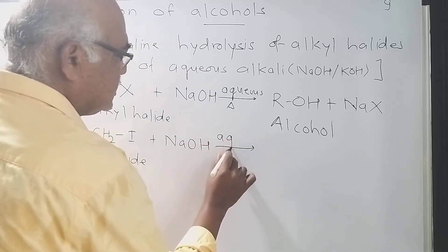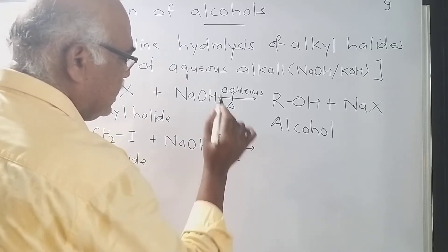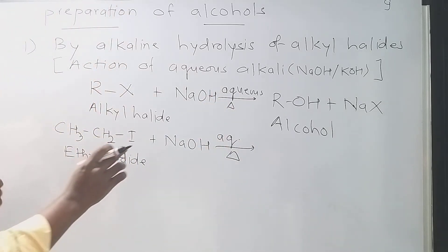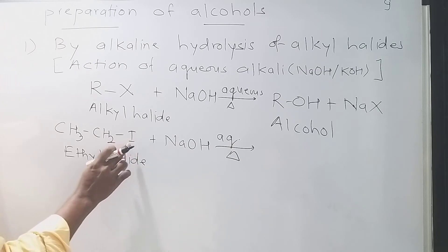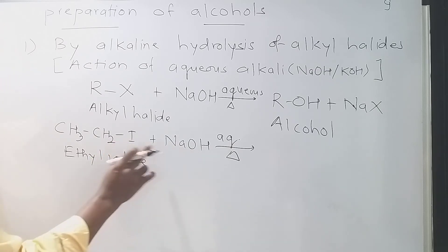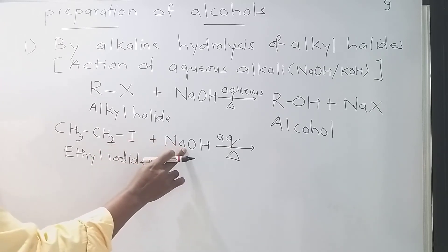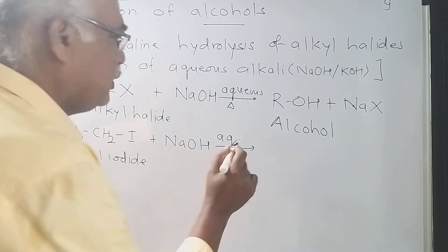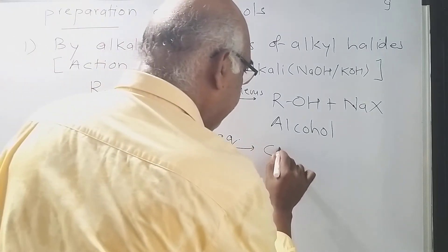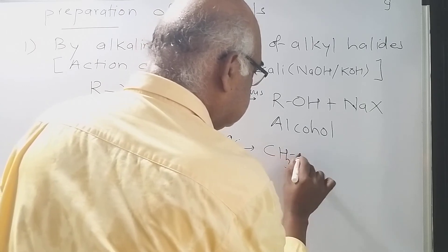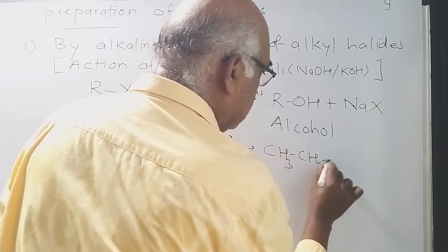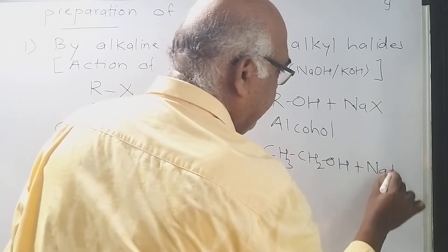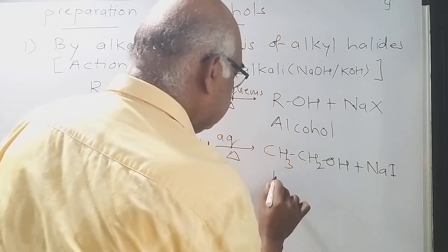The word 'aqueous' is very important. The iodine is replaced by OH. You will get CH3CH2OH plus NaI. So you will get ethyl alcohol.